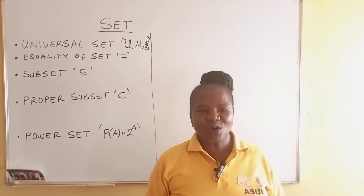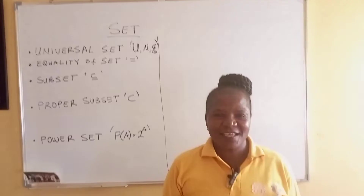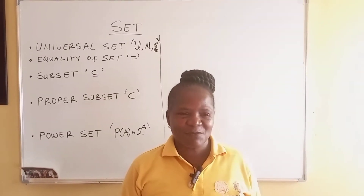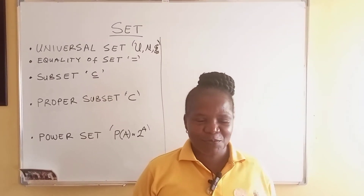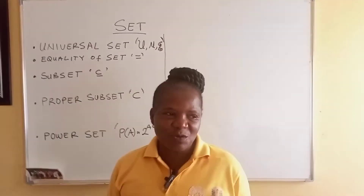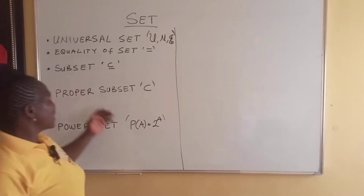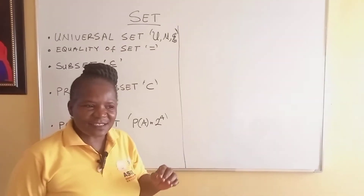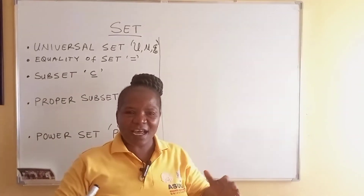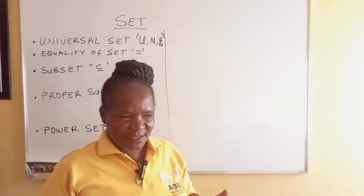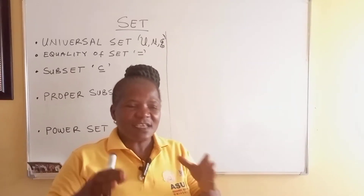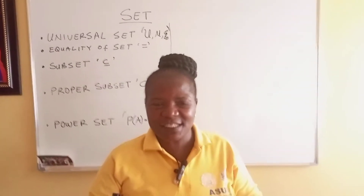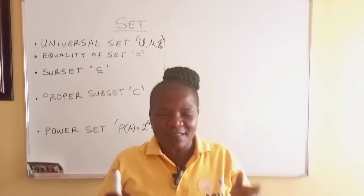Today we are going to continue with sets. In the previous video we started with that, but there are more to say about it before we go into serious problems. Let's look at the universal set. The universal set is the set that contains all the elements in that discussion — that is, it is relative to a problem. For a particular problem, you have a universal set that contains the elements of that discussion.